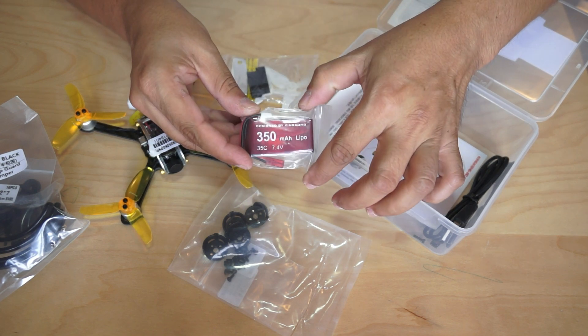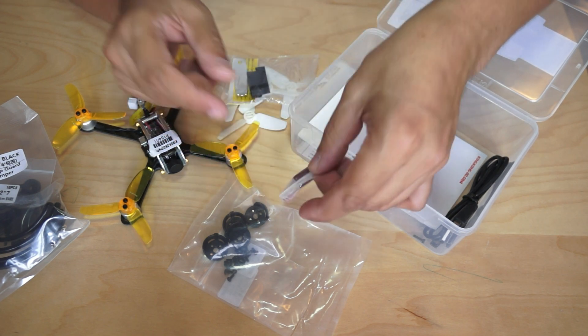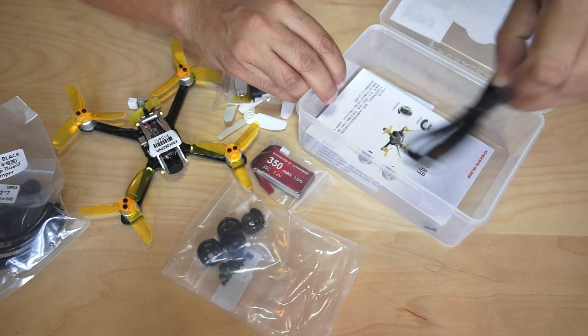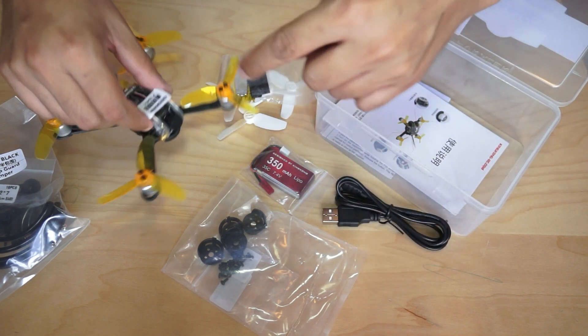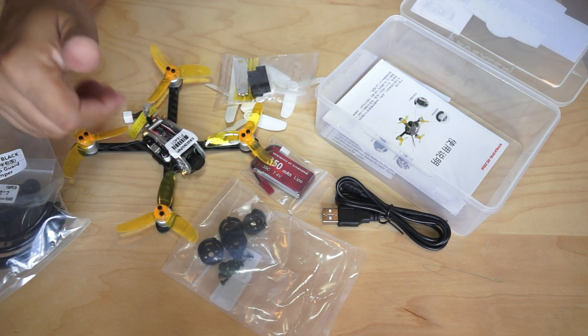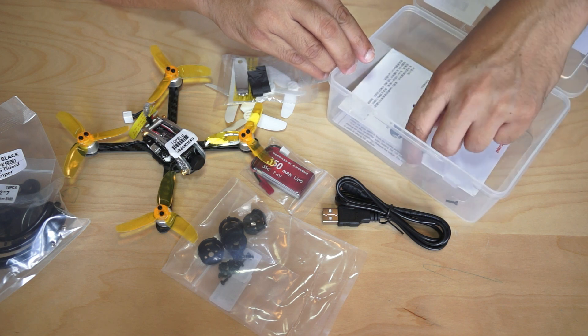Now we have a 350 milliamp 35C 7.4 volt lipo, nice very nice. We have a USB cable. I have lots of these USB cables now, one more. This is for you to adjust your flight controller's parameters by connecting it to the computer.